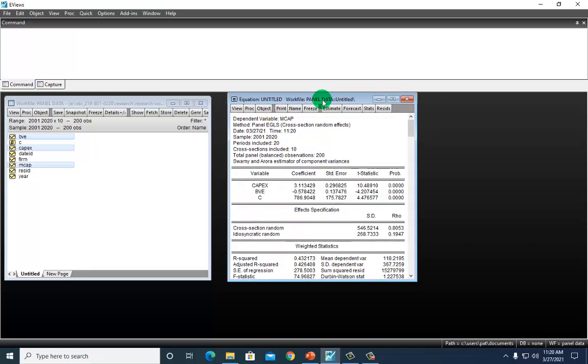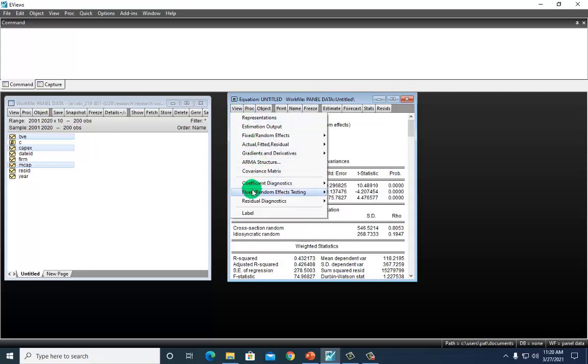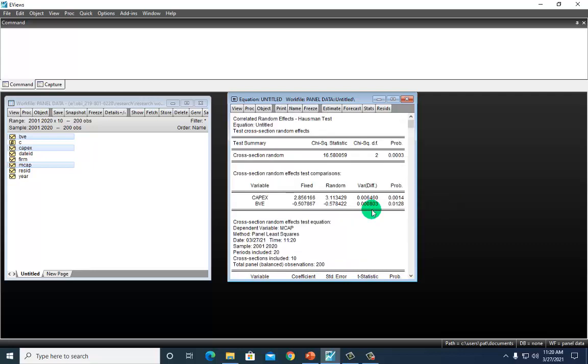And then to perform the Hausman test, go to view and scroll down here to fixed random effects testing, and hover across to correlated random effects Hausman test. Click on it. And here we go.